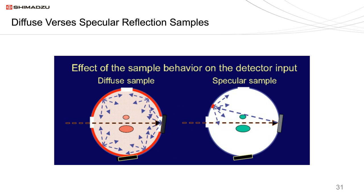Spheres have the ability to measure total reflection and diffuse reflection. For a sample with both a diffuse and specular component — something like a piece of wood with a shiny varnish — on the left you see the diffuse component being integrated by the sphere. On the right, the specular component also strikes the sphere and is integrated in total reflection mode. Depending on sphere design, there are ways of eliminating the specular to give diffuse only, by trapping out the specular light so only the diffuse component is measured.